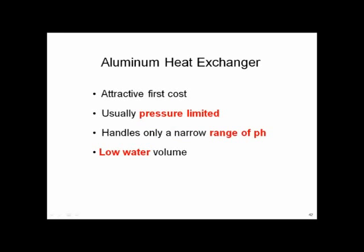We also see aluminum heat exchangers — attractive from a first-cost standpoint compared to stainless, but usually pressure-limited. The ones I've seen are rated around 50 to 60 psi — be aware of pressure limitations. Aluminum has a narrow range of acceptable pH, so when you check the IOM on aluminum heat exchanger condensing boilers, they will all require a good chemical treatment system to neutralize that 3 to 5 pH — that's a warranty condition. If you're going to use them, read the IOM and make sure you've got the right pH maintained.